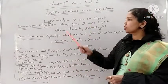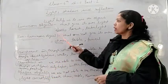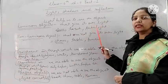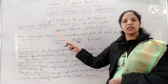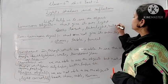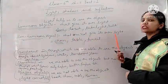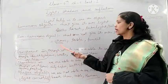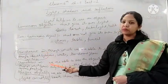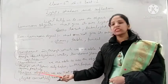So to summarize: light helps us to see objects. Luminous objects are the objects that give their own light. Non-luminous objects are those that do not give their own light — like a chair, table, or pencil. Transparent objects are those through which light can pass. Translucent objects are those through which light can pass but not completely. Opaque objects are those through which light cannot pass.